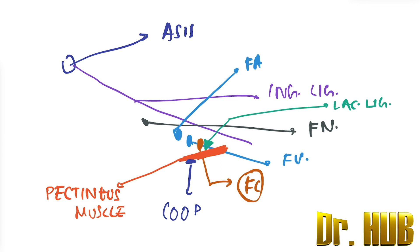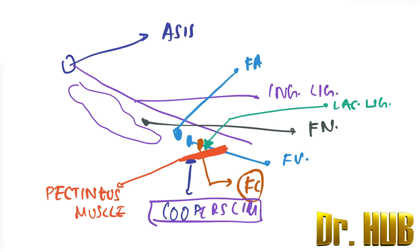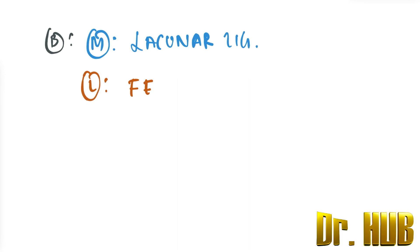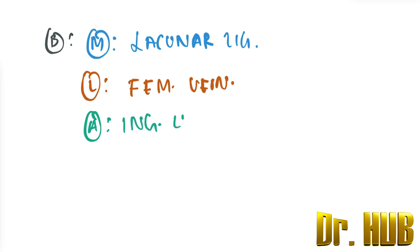Now let's go ahead with the theory. Looking at the borders: medially, what is present is the lacunar ligament. Laterally, it will be the femoral vein. Anteriorly, it is the inguinal ligament.